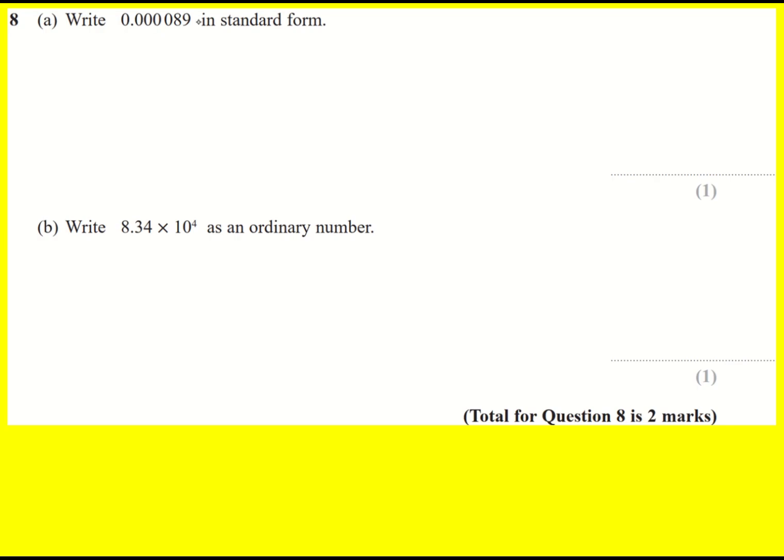We're asked to write 0.000089 in standard form. And as we move the decimal point, we're basically moving the number to the left in the place value table.